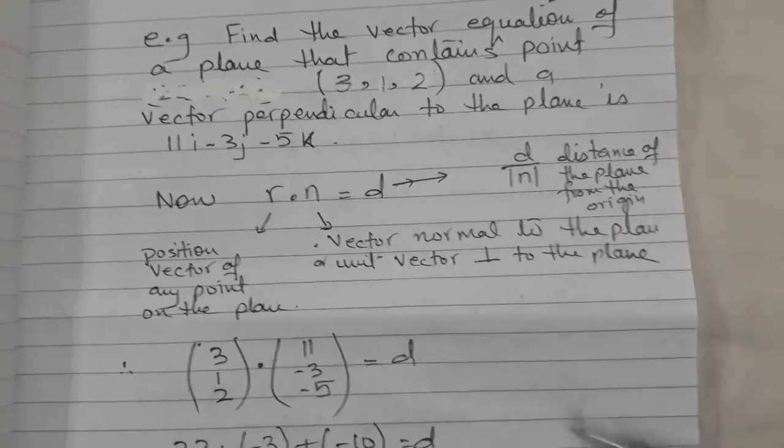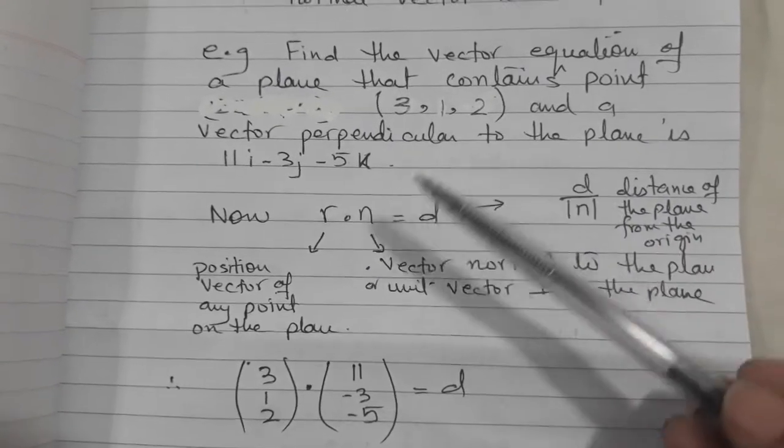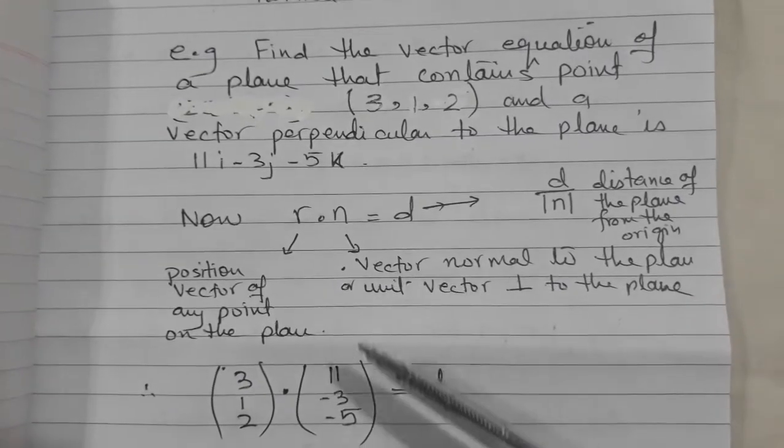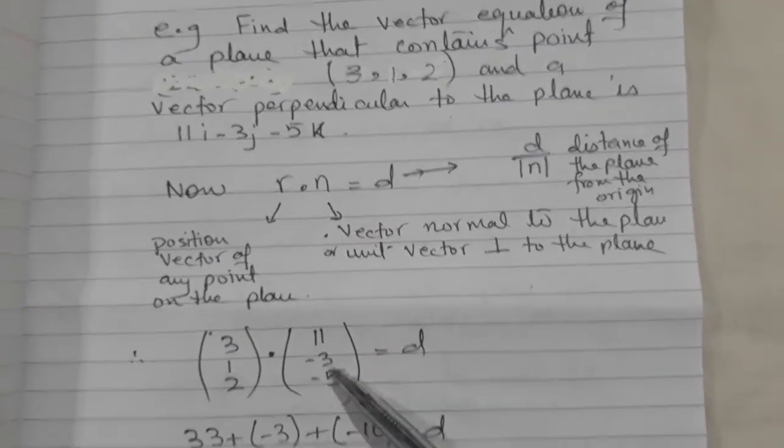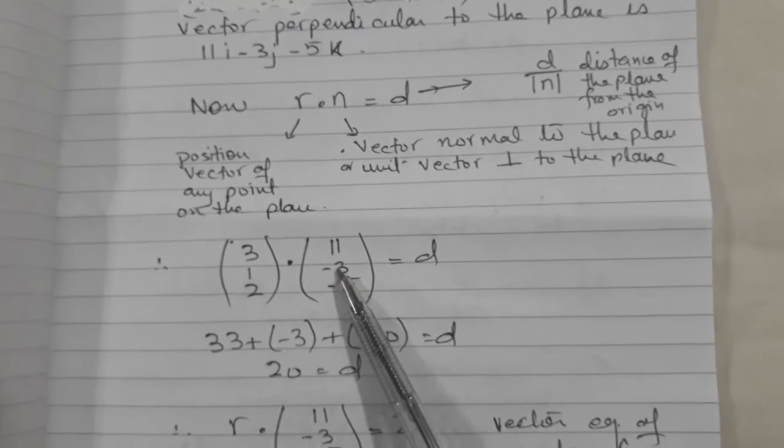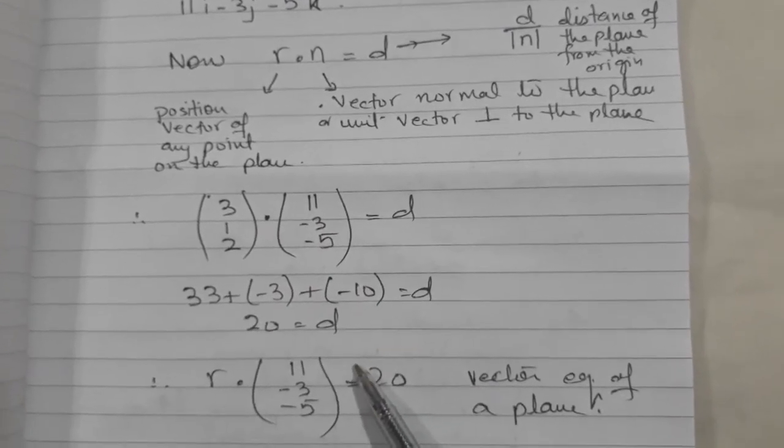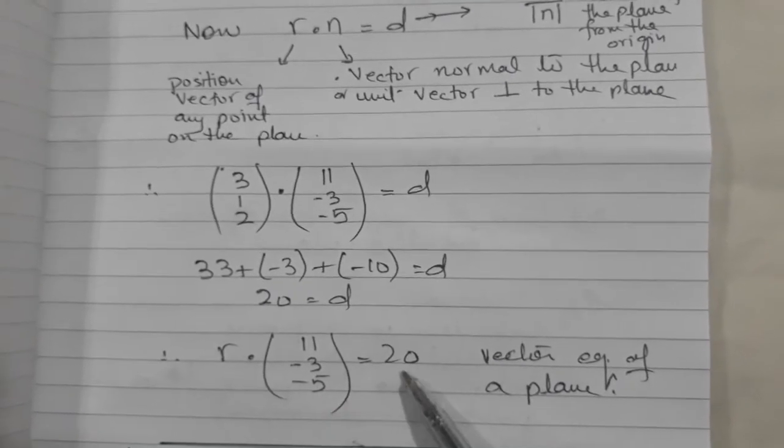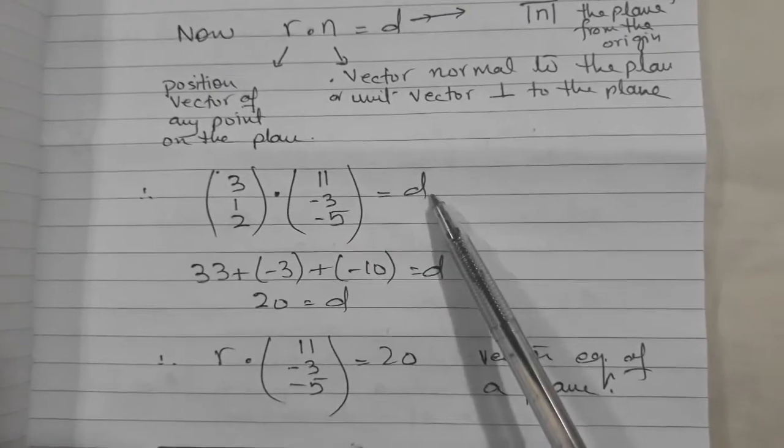So let's come back to this example. This was the point on the plane, so we will substitute in place of r. And this is the normal to the plane, so we will substitute this normal in place of this. Then we will apply the working of dot products, 3 times L plus this times this. So we got the value of d, 20. So the equation, vector equation of the plane will take this form: r dot this equals to 20.